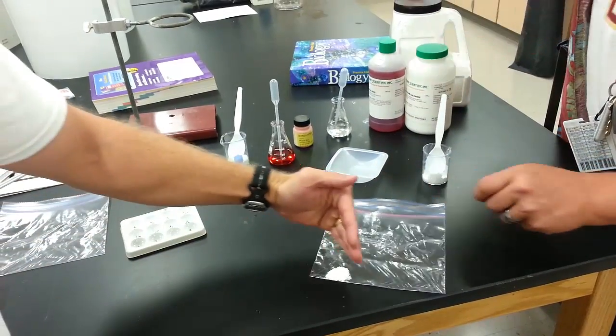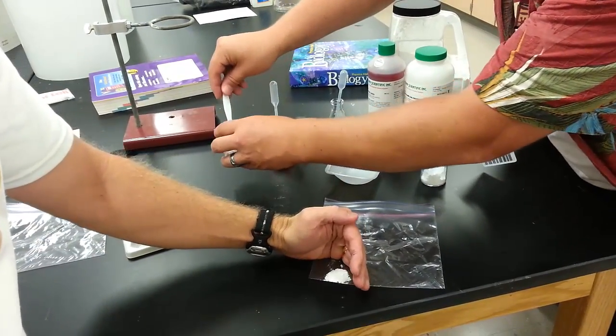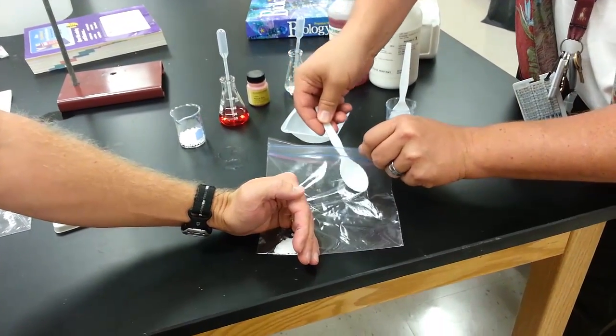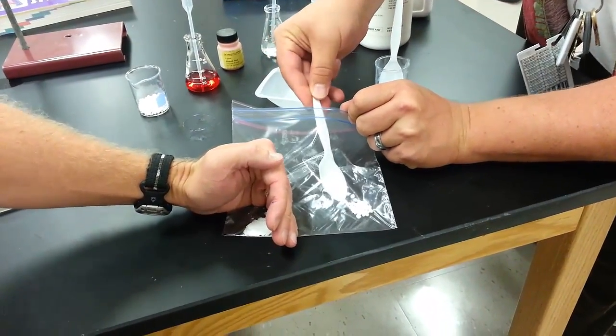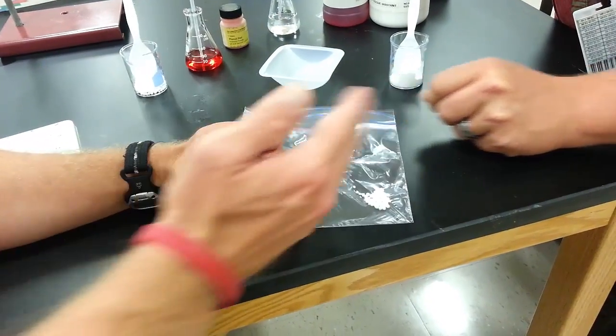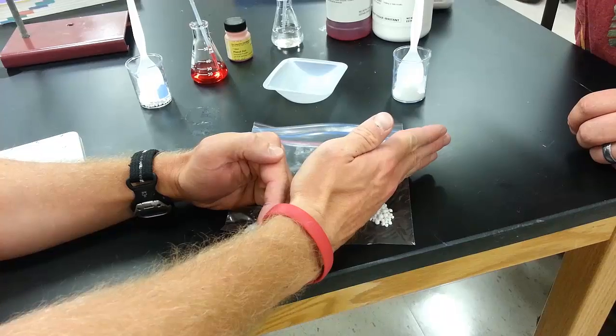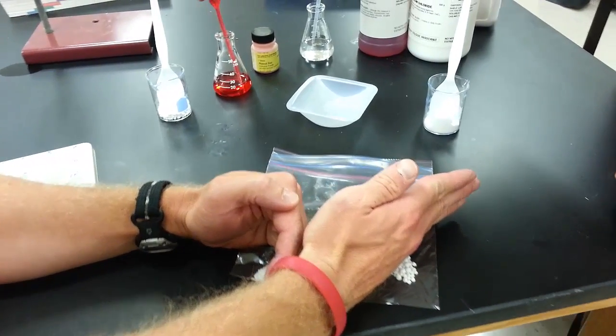Then another person in the group should section off that chemical so that when you add the next one, it's not going to mix. Put the other chemical in the other corner. Then have another group member section that off, and your third chemical will be the phenol red.